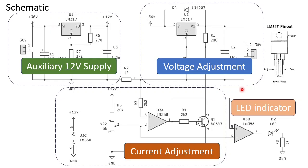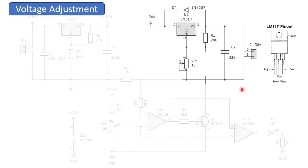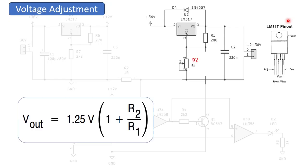Let's start with the voltage adjustment part. In this part, the star of the show is the LM317 here. This is a voltage regulator IC of which you can set the output voltage with a resistor divider according to this formula.